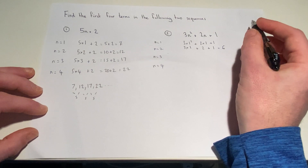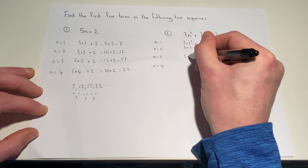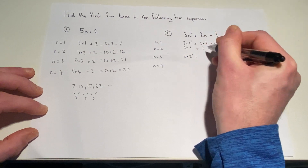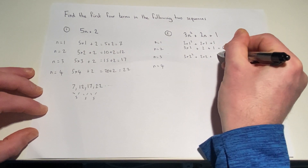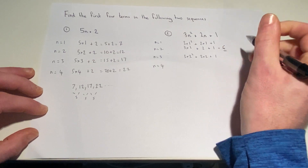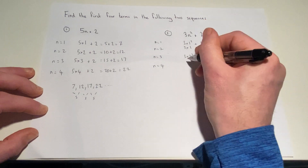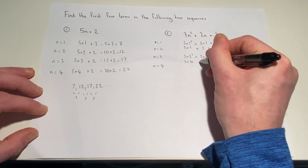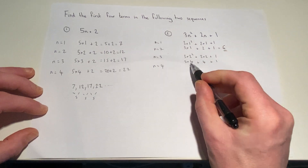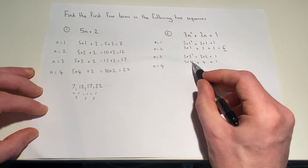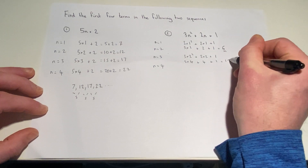For the second term, n is 2, so we do 3 times 2 squared plus 2 lots of 2, add 1. Again, power first: 2 squared is 4. So it's 3 times 4 plus 2 times 2, which is 4, plus 1. Well, 3 times 4 is 12, add 4 is 16, add 1 equals 17.